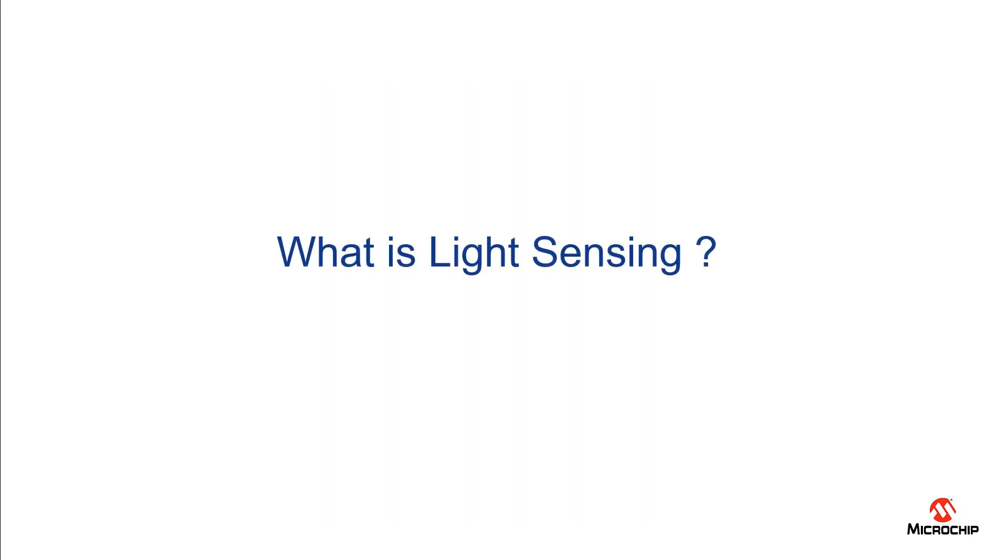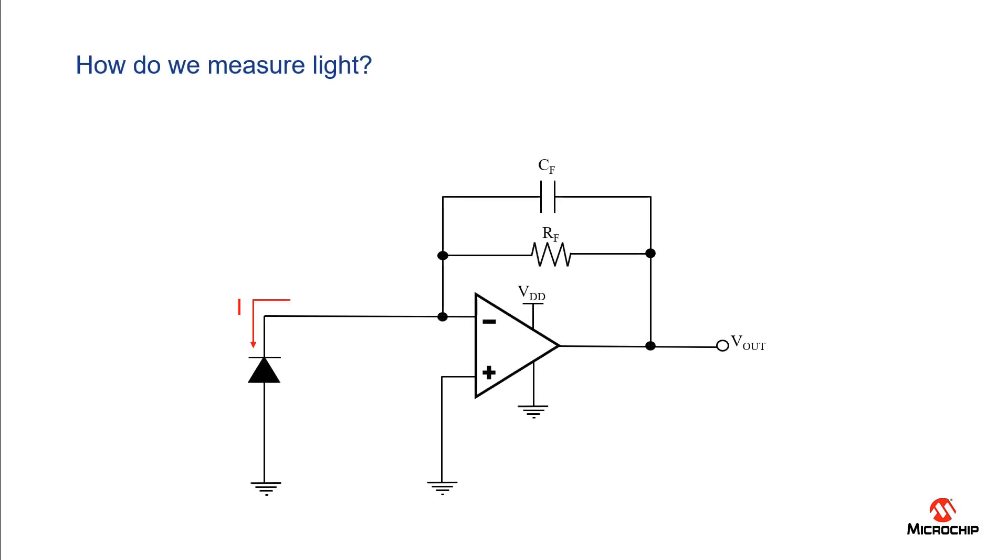So what is light sensing and how do we measure it? To measure light we require a photodiode and a trans-impedance amplifier. The photodiode converts light into a current and then the trans-impedance amplifier boosts that signal to the right voltage level. Now depending on the application the type of requirements of the trans-impedance amplifier changes.